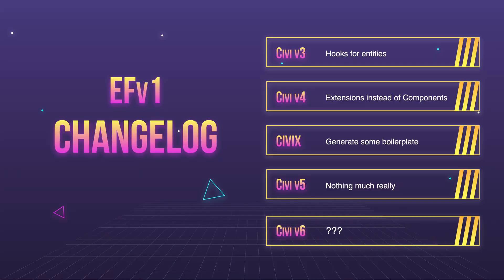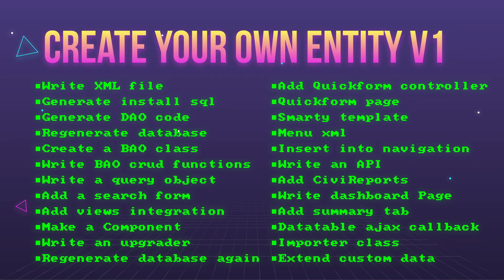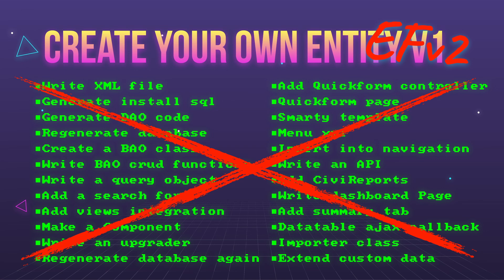So I want to put a question to you. By version 6 — which is 20% more than the last version — how many of these steps do you think we have eliminated? There are about 24 up here. Any guesses? Let's go with all of it. All of it. You don't have to do any of that to create a new entity.